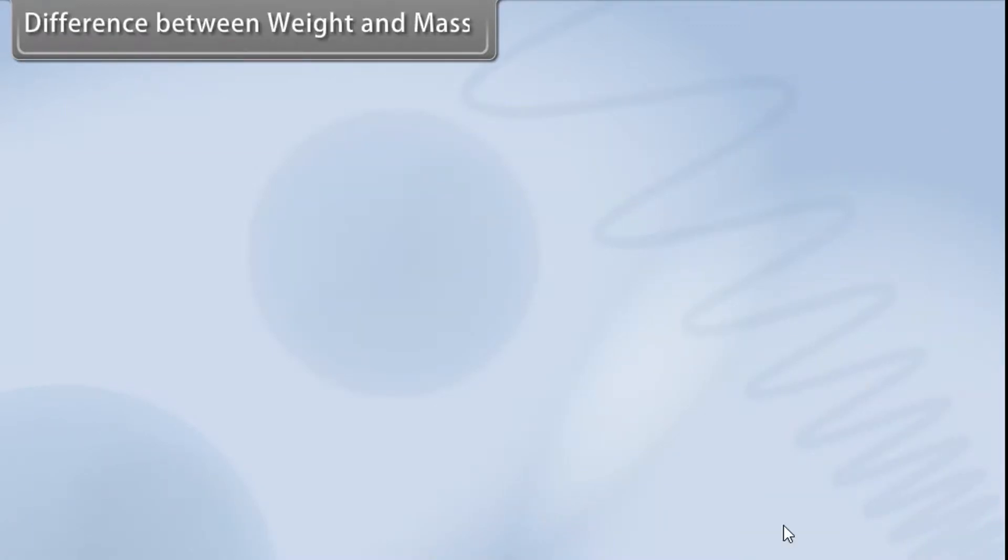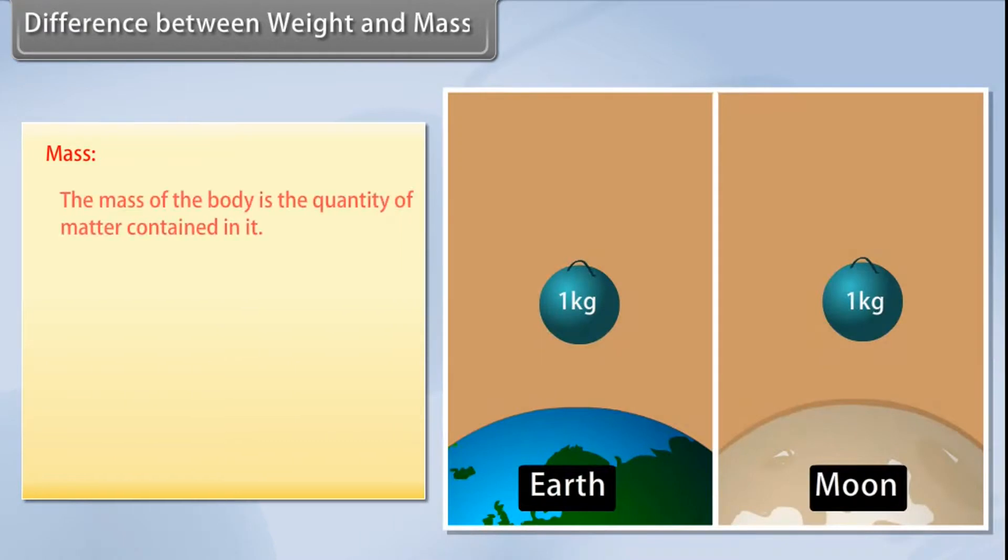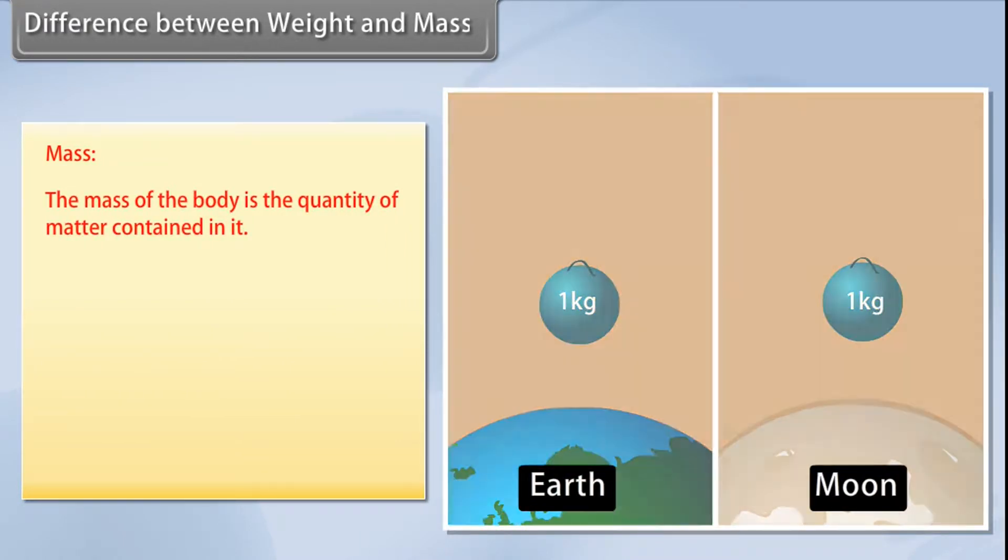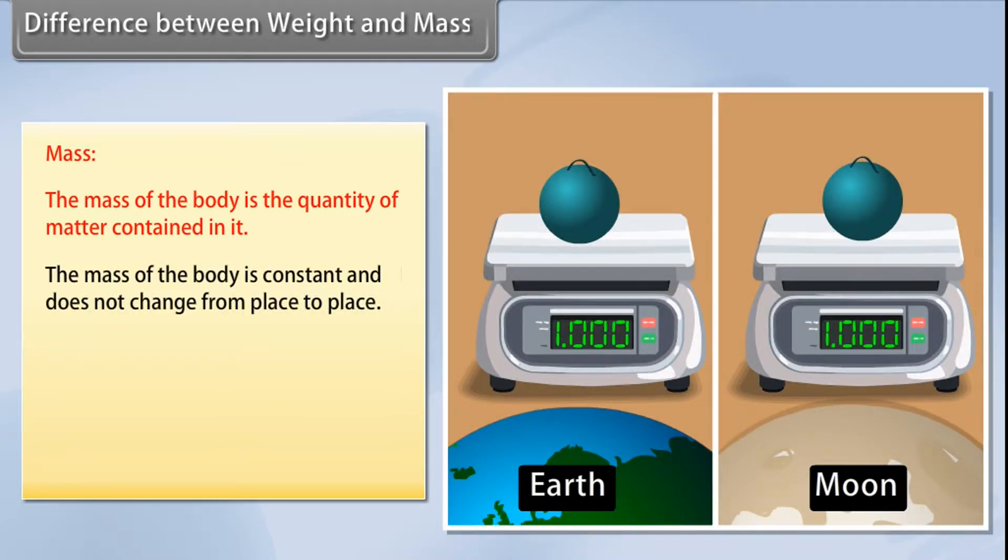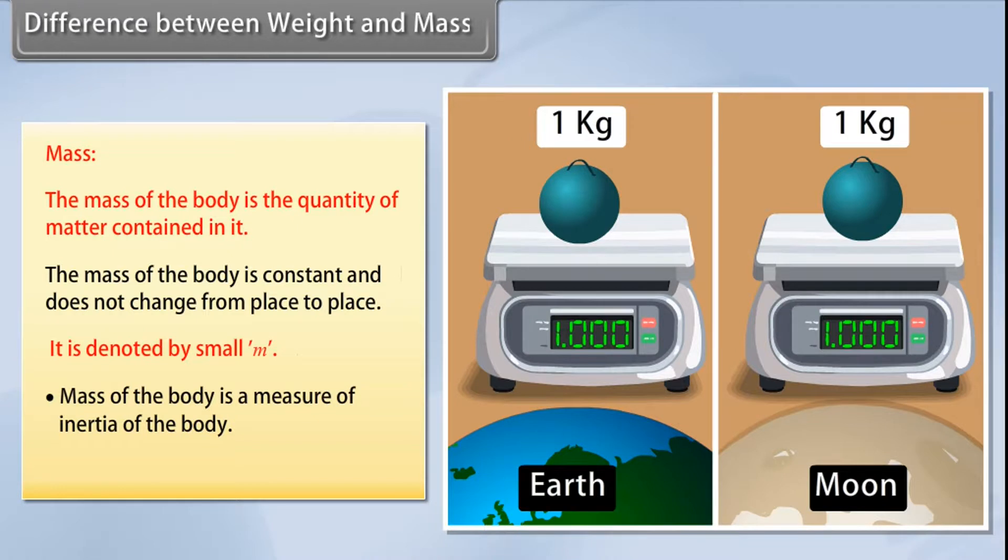Difference between weight and mass. Mass: The mass of the body is the quantity of matter contained in it. The mass of the body is constant and does not change from place to place. It is denoted by small m. Mass of the body is a measure of inertia of the body. Mass cannot be zero.